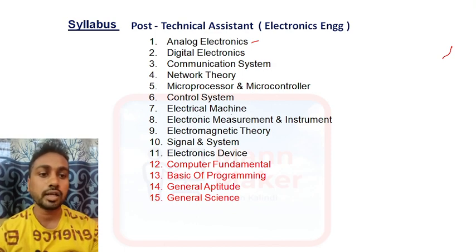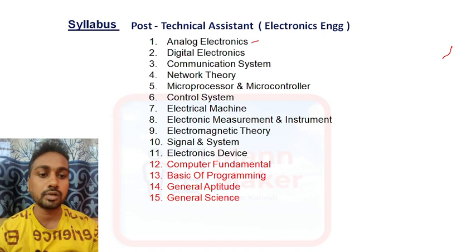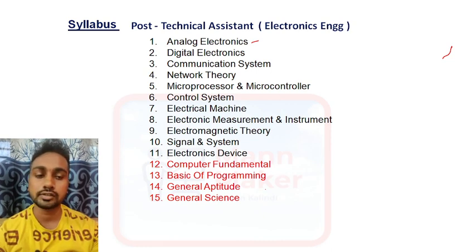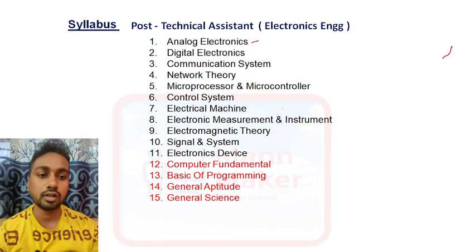The syllabus also covers control system, electrical machines, electronics measurement and instrumentation, electromagnetic theory, signal and system, and electronics devices. These are the electronics topics — you will get only technical questions from this section. Apart from that you will get some questions from computer fundamentals, basics of programming, general aptitude, and general science. This is all about the syllabus for electronics engineers.